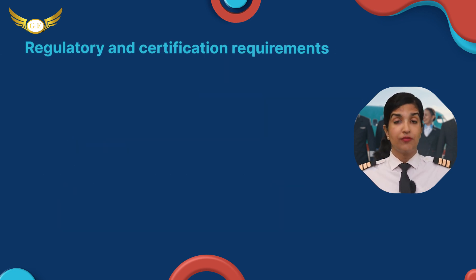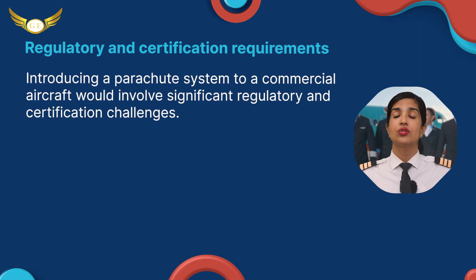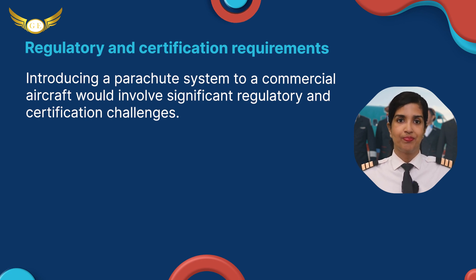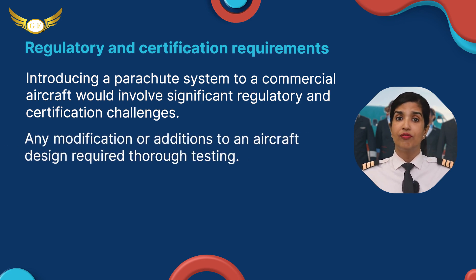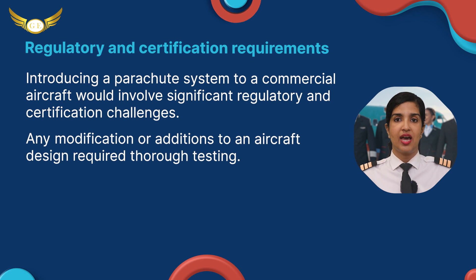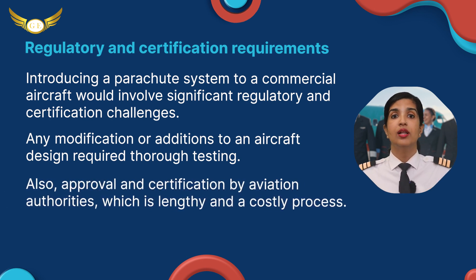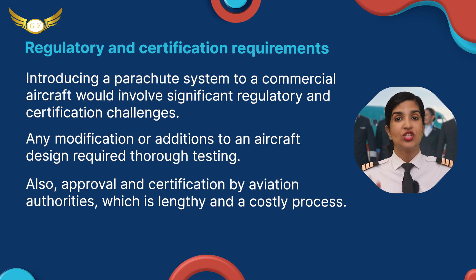5. Regulatory and Certification Requirements. Introducing a parachute system to a commercial aircraft would involve significant regulatory and certification challenges. Any modification or addition to an aircraft's design requires thorough testing, approval, and certification by aviation authorities, which is a lengthy and costly process.